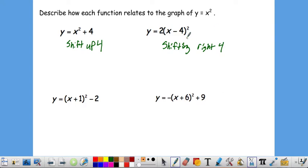That left and right shift is always backwards of what you think it is, because the general form is x minus h. And then the 2 out in front makes our graph skinnier, so we call that a stretch by 2. Down here we have 2 shifts. We have a plus 1 on the x, so that's a shift left 1. And then the minus 2 is a shift down 2.